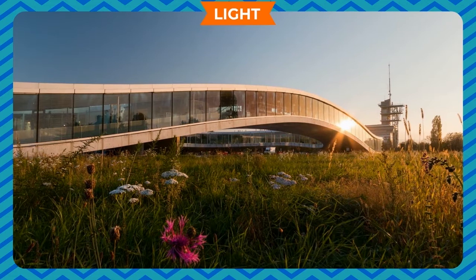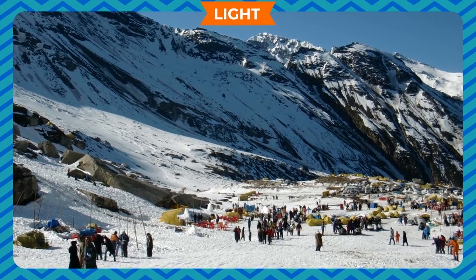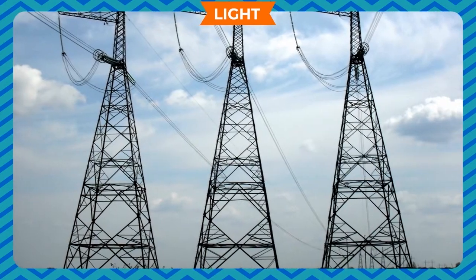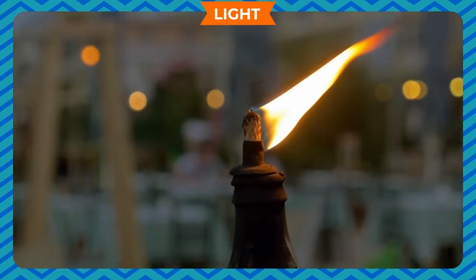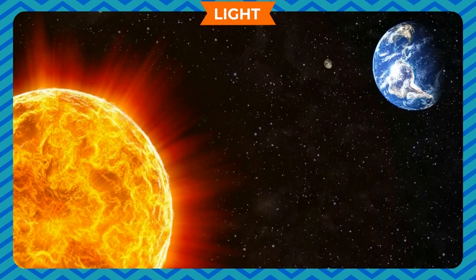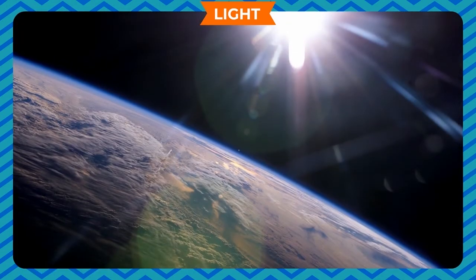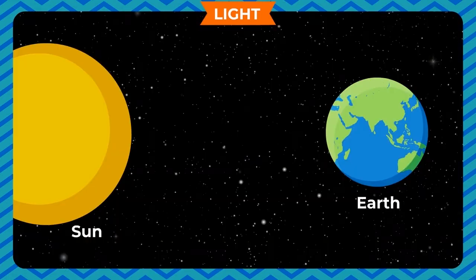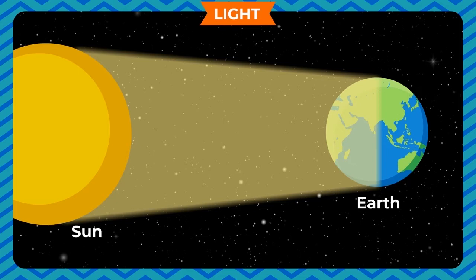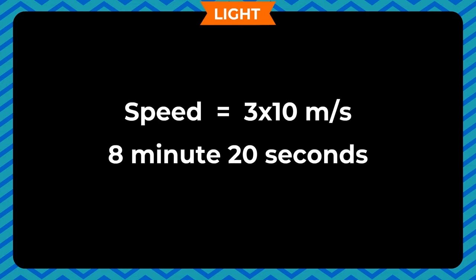Light is essential for life on the earth. Plants produce food in the presence of sunlight. Even when people go to tourist places where electricity is limited, people burn fossil fuels such as coal and wood to produce heat and light. Furthermore, the sun is millions of kilometers far from the earth, but still the sunlight reaches the earth. This means light travels very fast. According to scientific measures, the speed of light is 3 × 10⁸ meters per second, and sunlight takes 8 minutes 20 seconds to reach the earth's surface.